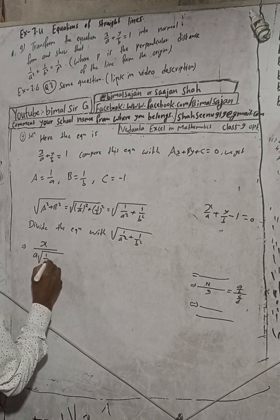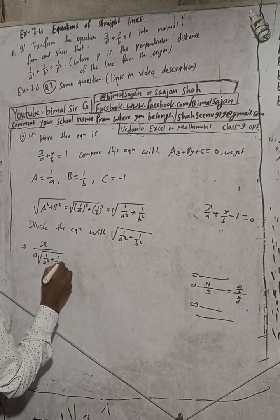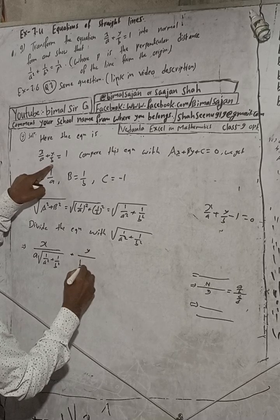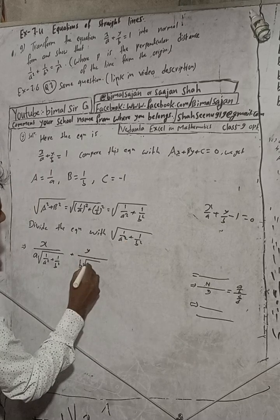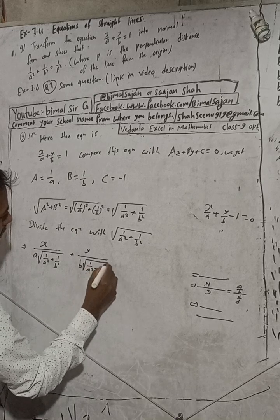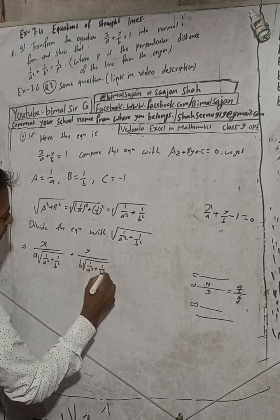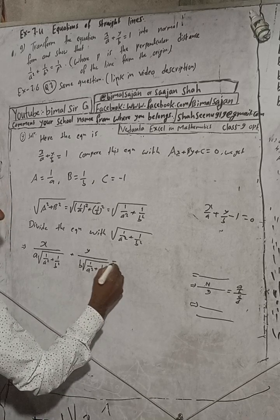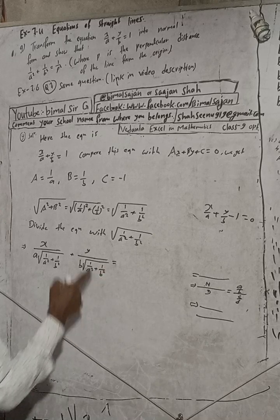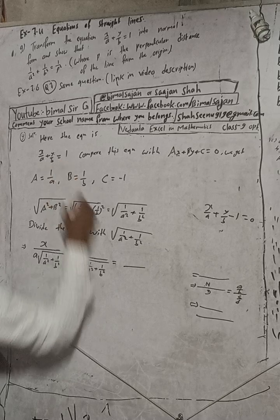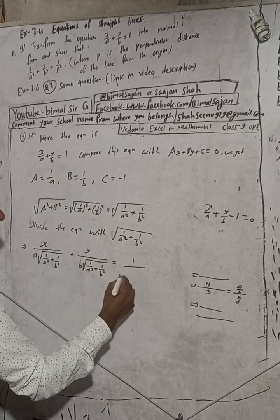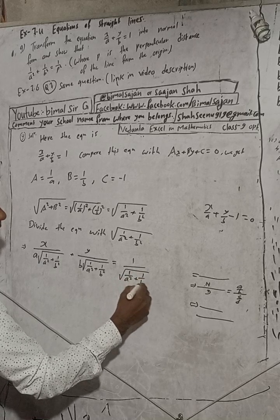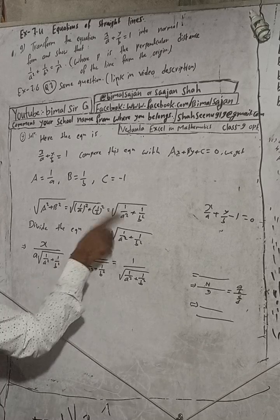So dividing through, we get x/a divided by √(1/a² + 1/b²), plus y/b divided by √(1/a² + 1/b²), equal to 1 divided by √(1/a² + 1/b²).